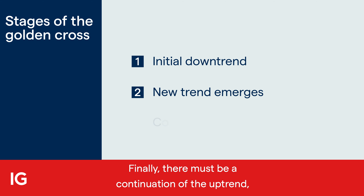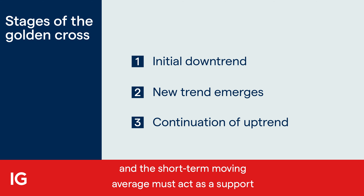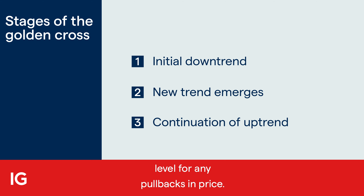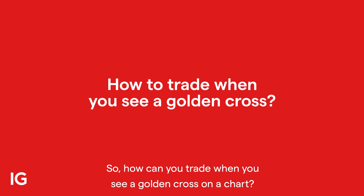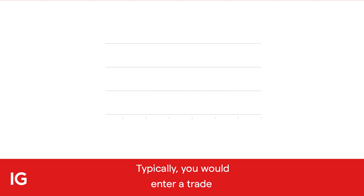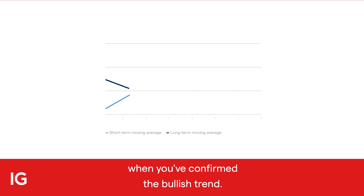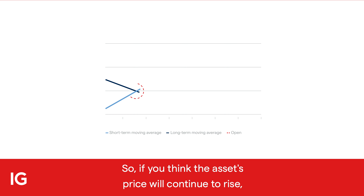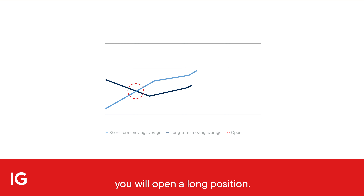Finally, there must be a continuation of the uptrend, and the short-term moving average must act as a support level for any pullbacks in price. So, how can you trade when you see a golden cross on a chart? Typically, you would enter a trade when you've confirmed the bullish trend, so if you think the asset's price will continue to rise, you'll open a long position.